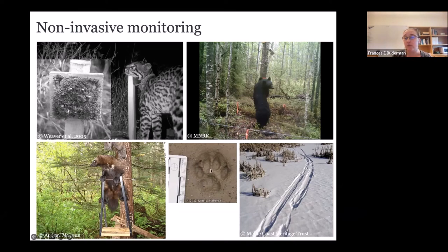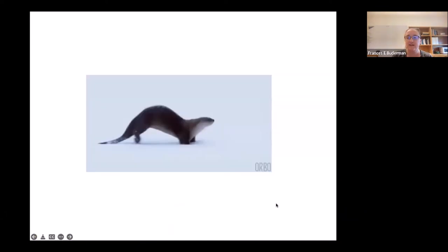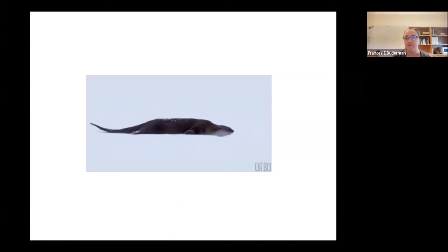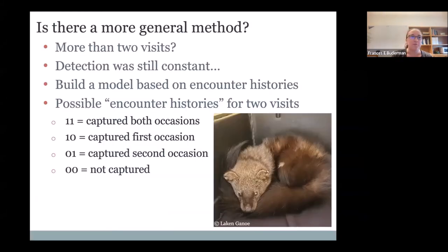We can also just get sign or presence, using things like foot tracks — though you still have issues with non-detection that you have to account for. I mentioned the Lincoln-Peterson method: you sample the population twice, calculate the proportion of individuals you saw both times as your detection probability, use that to correct your count, and you get your estimate of abundance.